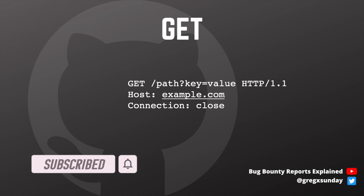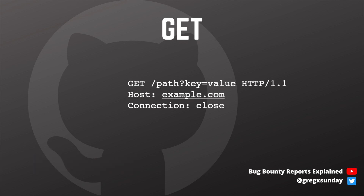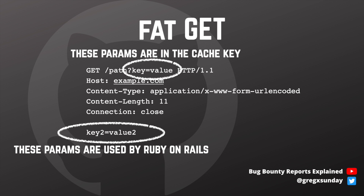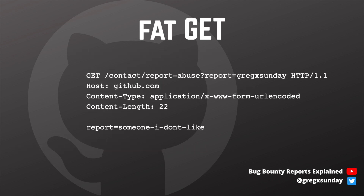This is a standard GET request — parameters are where they always are, which is in the URL. And how about this request? It seems valid, but do you think web application servers will actually use those parameters? Turns out some frameworks do, and one of them is Ruby on Rails, which was used to develop the GitHub website. If you send such requests, GitHub will prioritize the parameters from the body, but the Varnish cache server will use the parameter from the URL in its cache key. This way you can poison any parameterized request with arbitrary values.